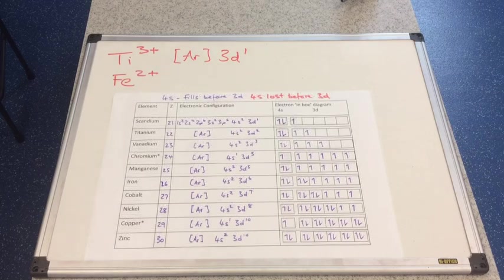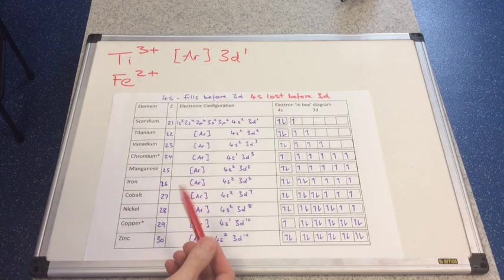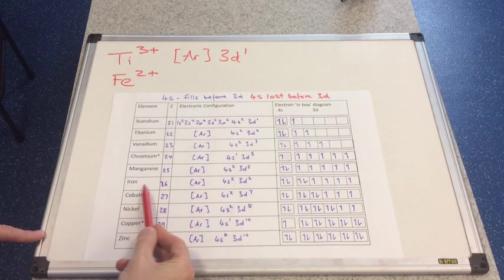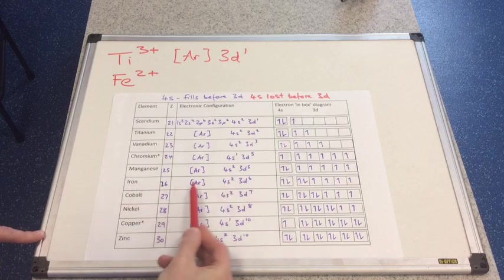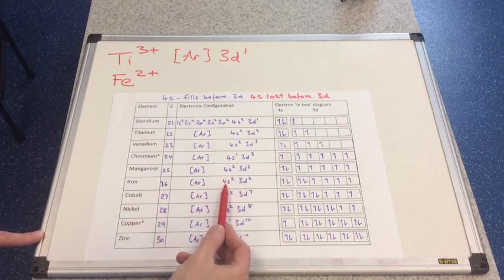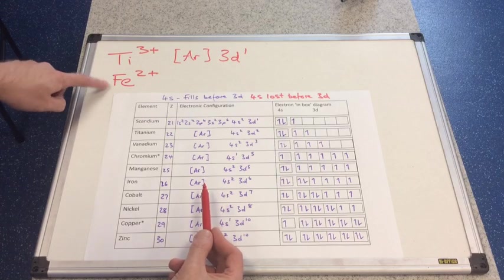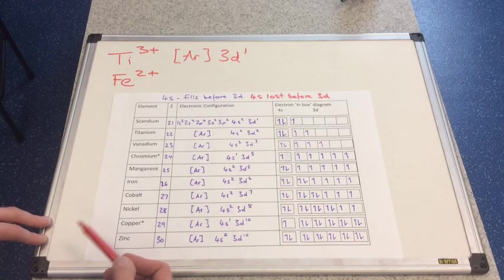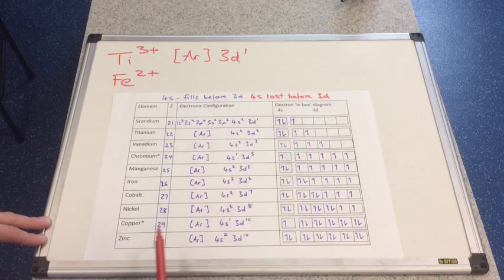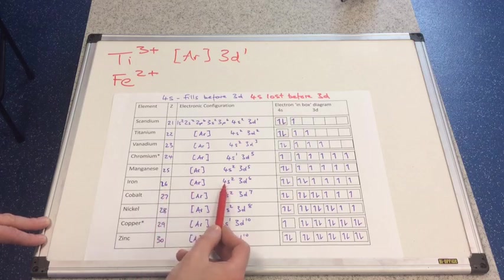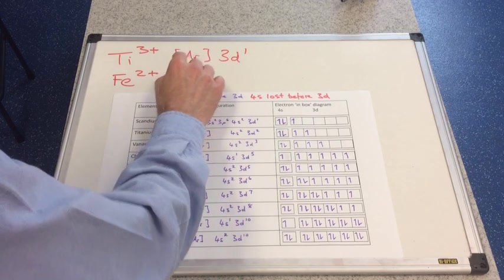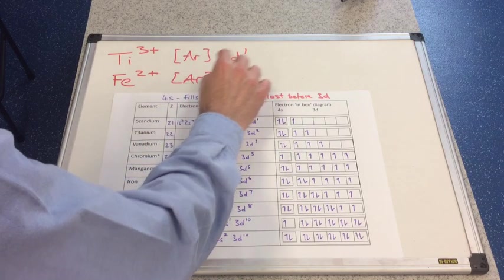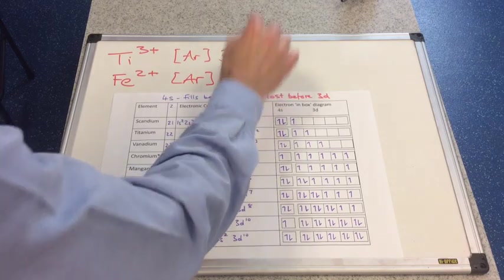We look at iron 2+ now. So there's iron. This is the element configuration, argon 4s2, 3d6. So if we're going to form a 2+ ion, we need to lose two electrons. Which electrons are going to go? The 4s electrons. So they will disappear. So it's just argon 3d6.